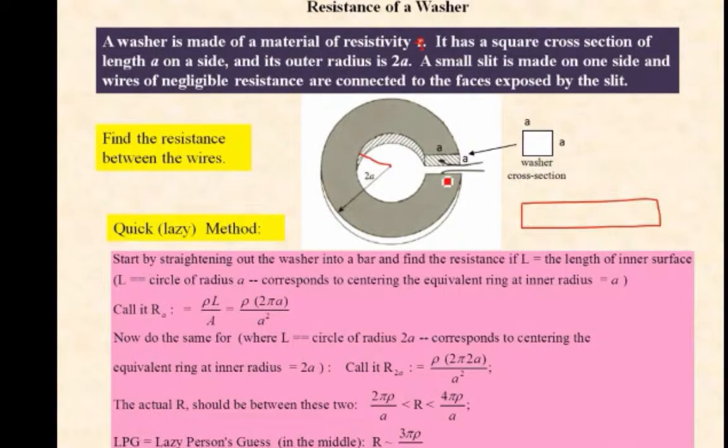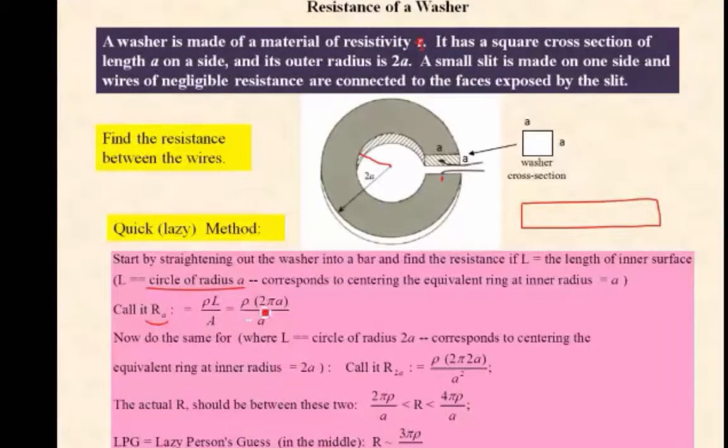In our case, we're going to take the radius to be right in between. Here's L, the length. And so it's going to be the circumference of a circle of radius A. We'll call that R_sub_A here. And so that will be rho L over A. Just the simple equation for resistance in terms of resistivity. The length is 2πA. And the area is A squared. So that's our simple result for R_sub_A.